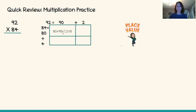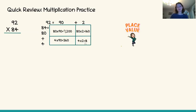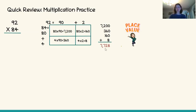So 80 times 90 gives us 7,200. 4 times 90 is 360. Then 80 times 2 is 160, and 4 times 2, multiplying the ones, equals 8. Once we have our four partial products from these rectangles, we bring them over and add them together to solve 92 times 84. Our final answer is 7,728.